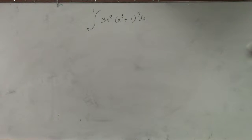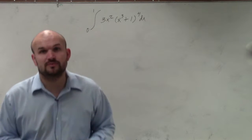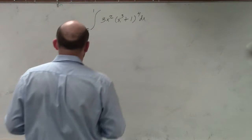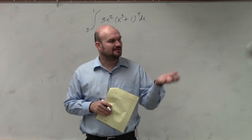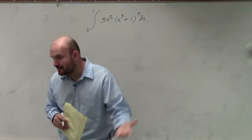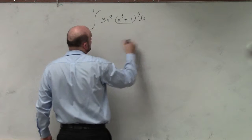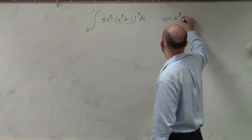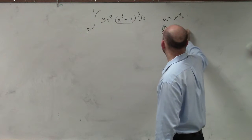Start with what we can figure out and what we know, which is first identifying our u. Once we look at our function, there are some obvious clues — when we're looking at square roots or roots, trigonometry, or binomials raised to a power — that tells us what our u is. In this case, u is going to be x cubed plus 1. Then we find du/dx, which is going to equal 3x squared.